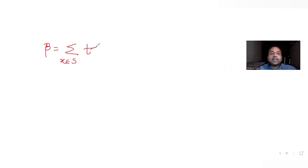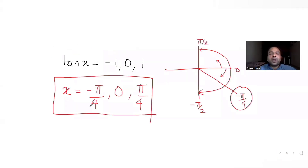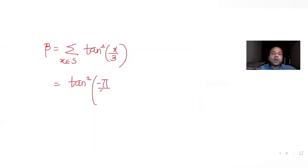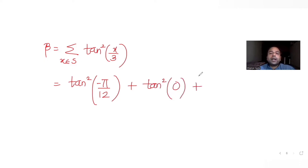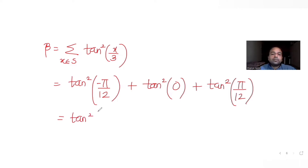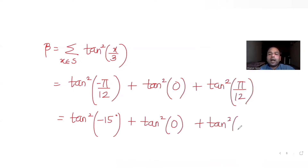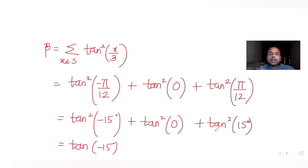Now we find β = Σ tan²(x/3) for all x in S. The three terms are: tan²(-π/12) + tan²(0) + tan²(π/12). Converting π/12 to degrees gives 15°, so we need tan²(-15°) + tan²(0°) + tan²(15°).